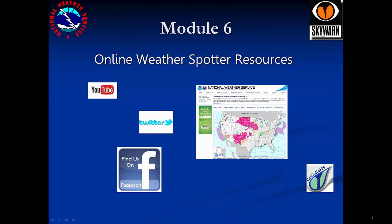Welcome to Module 6: Online Weather Spotter Resources. This module will cover ways you can get information from the National Weather Service and various ways you can post your information and reports using social media and the internet. You will also be shown how to sign up as a Skywind weather spotter.